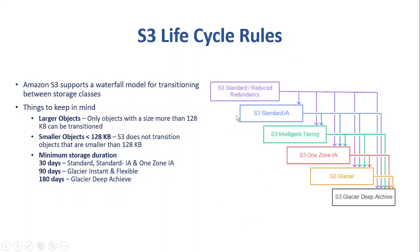S3 supports a waterfall model for transitions. Starting from S3 Standard, objects can transition to other classes like Standard-IA, Intelligent-Tiering, One Zone-IA, Glacier, or Glacier Deep Archive. However, you cannot transition backwards — for example, an object in Standard-IA cannot be transitioned back to S3 Standard. This is the waterfall model and we'll confirm this in the demo.